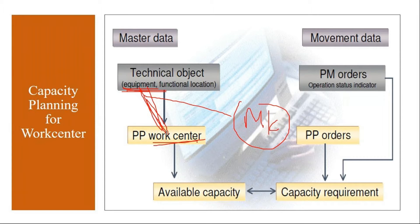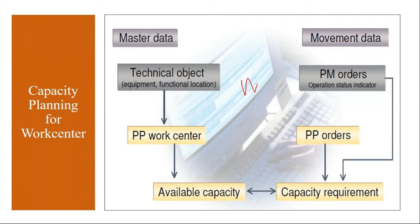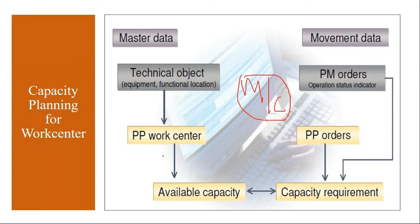After that, suppose the PM team on a particular machine plans to do some preventive maintenance activity. Normally in industries, the engineering department at regular intervals does preventive maintenance like cleaning the machine, changing spare parts, applying oils. On those days when preventive maintenance is planned, that information should go to the production team so that they do not plan any production activity on that machine on those days. That is the integration.